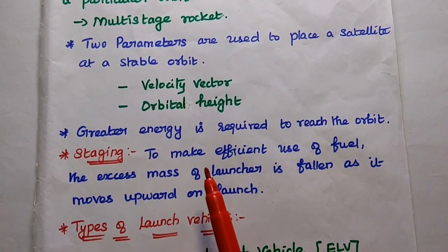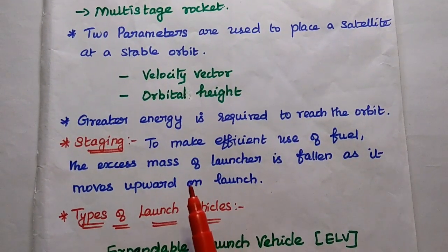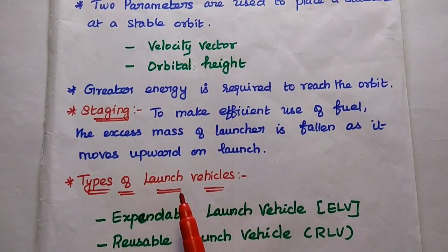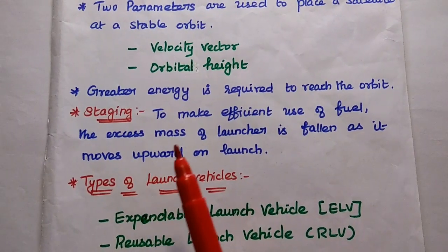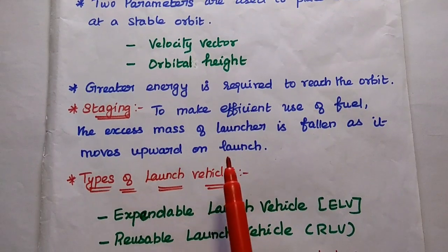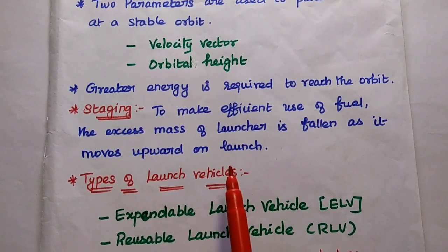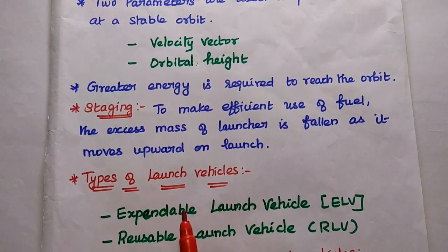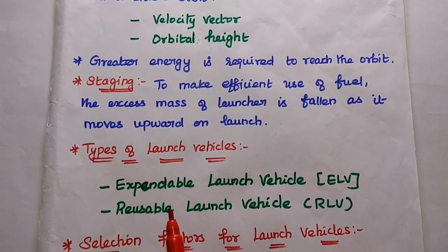It requires greater energy to reach the orbit, so for that we maintain different stages. In order to make efficient use of fuel, the excess mass of the launcher is fallen off as it moves upward on launch. Once a stage has completed its functionality, it falls down. This way we can increase the efficiency as well as reduce the weight.